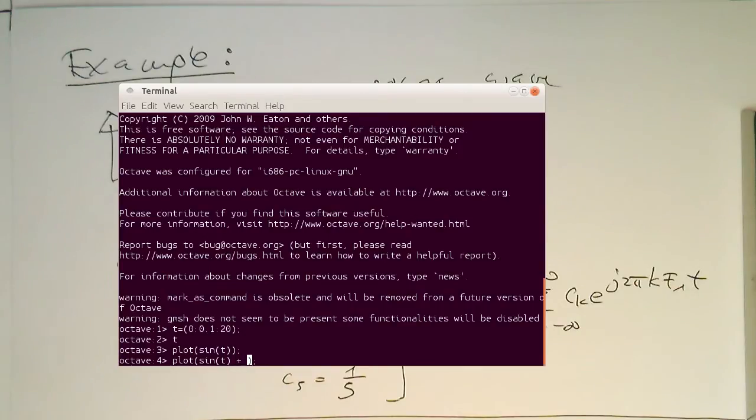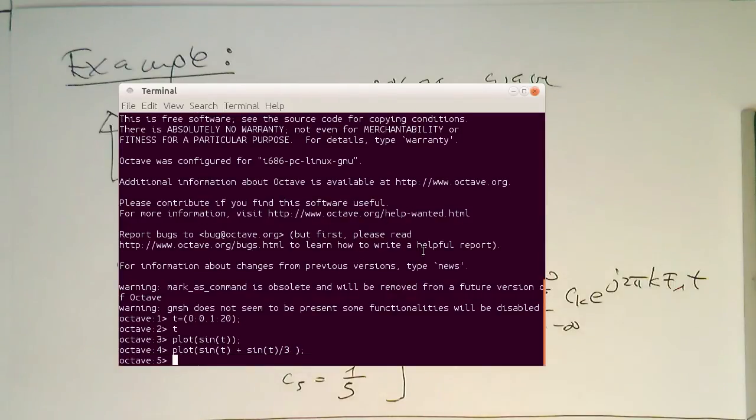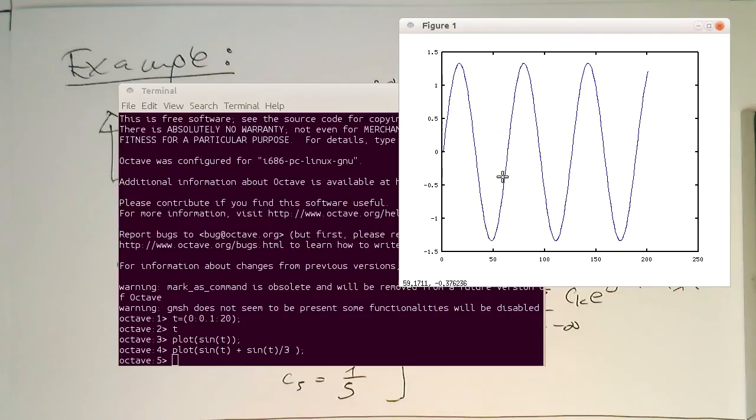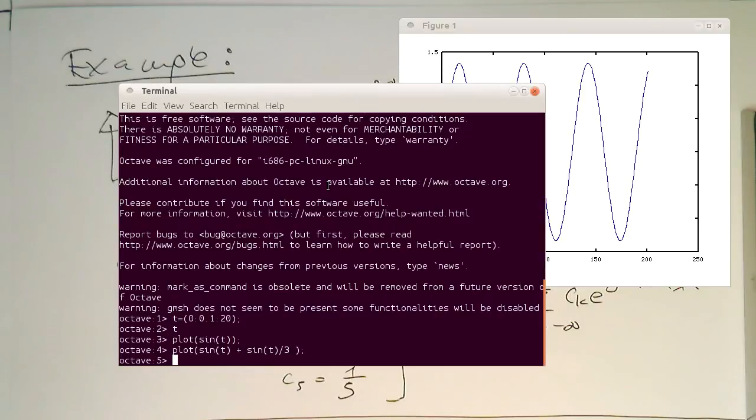So we do a third - that's our CK. In this case, C3 multiplied, or let's write this like sine of t divided by 3. Let's have a look how this looks like. Oops, wrong frequency - this is three times the fundamental frequency, otherwise we won't see anything.